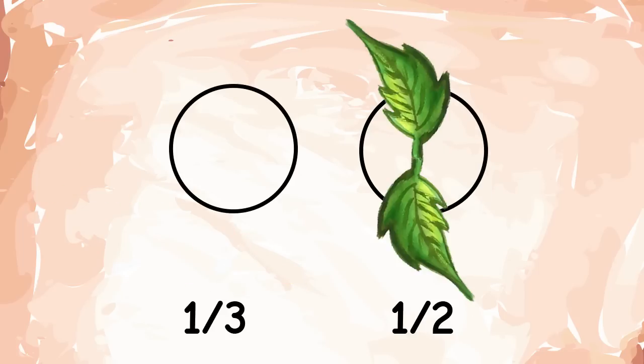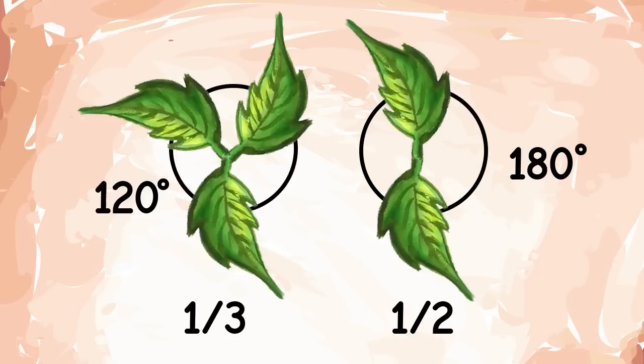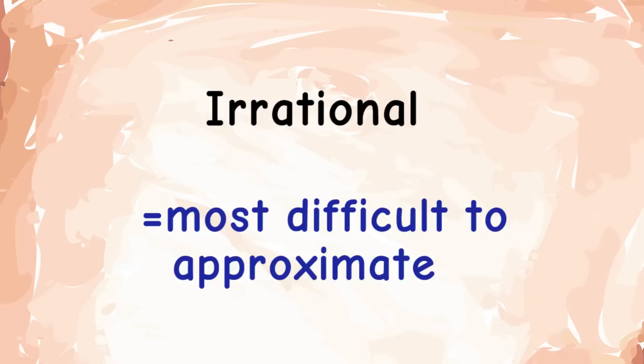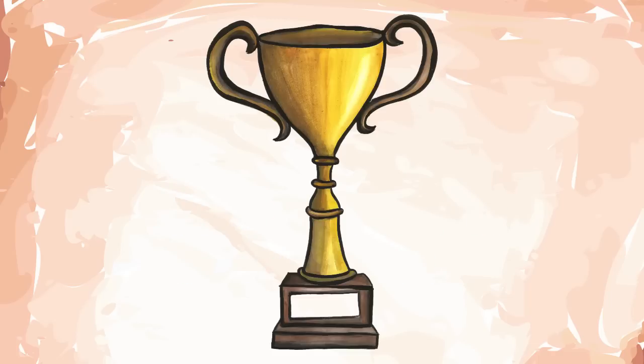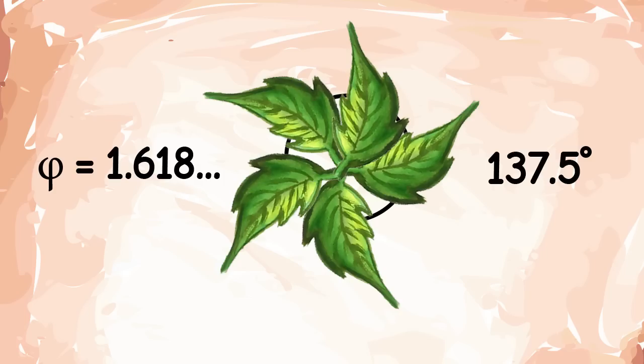In fact, any rational fraction of the circle would mess things up sooner or later. The plant needs to choose an irrational number and even more so an irrational number that cannot be easily approximated by a rational number. And the award for the most difficult to reach irrational number goes to, as you probably know, the golden ratio.